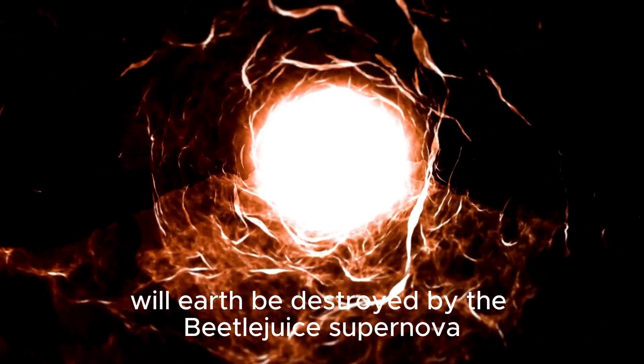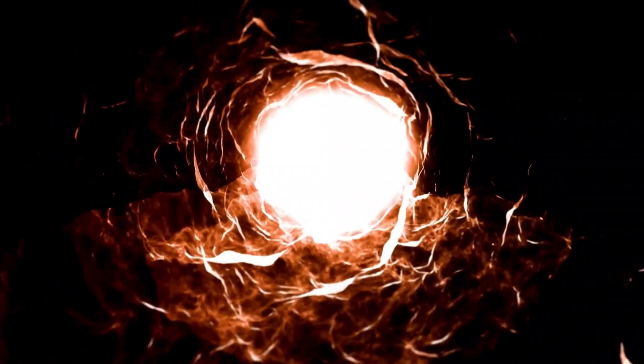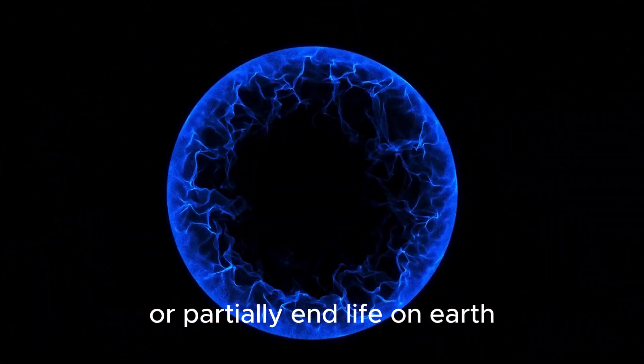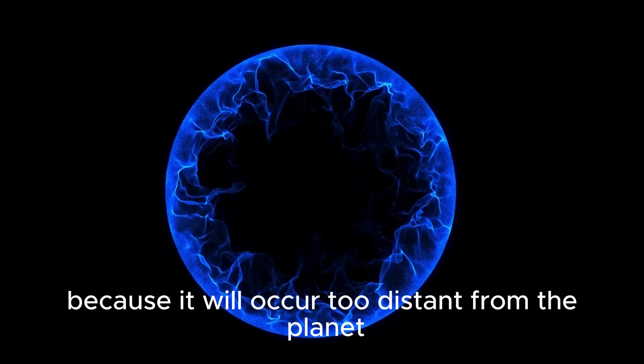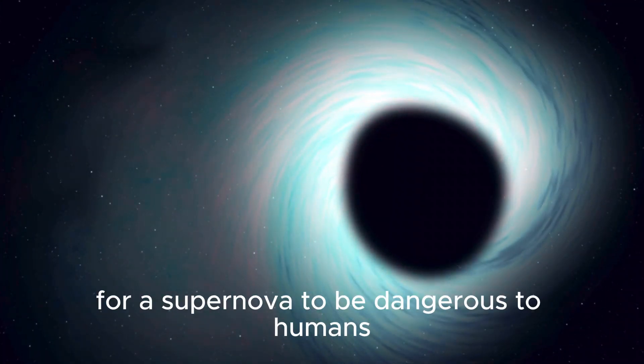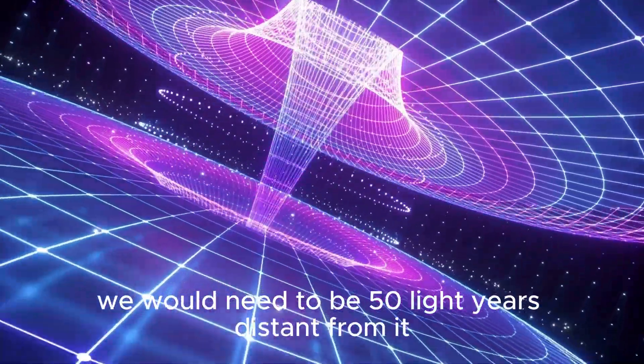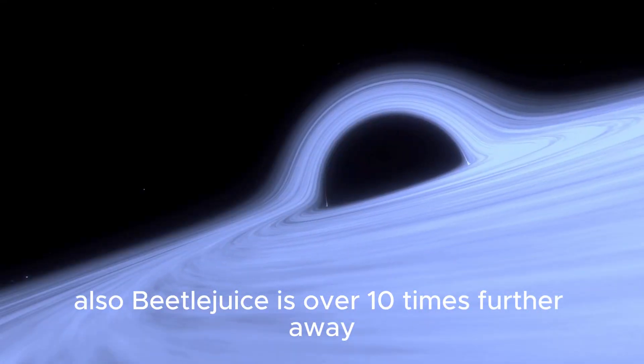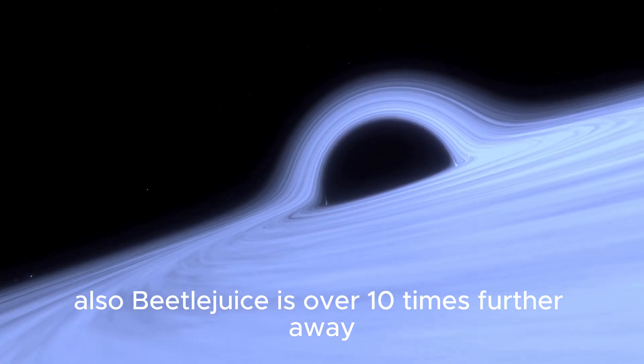Will Earth be destroyed by the Betelgeuse supernova? No. The explosion of Betelgeuse won't affect or partially end life on Earth because it will occur too distant from the planet. Astronomers estimate that for a supernova to be dangerous to humans, we would need to be 50 light-years distant from it. Also, Betelgeuse is over 10 times further away.